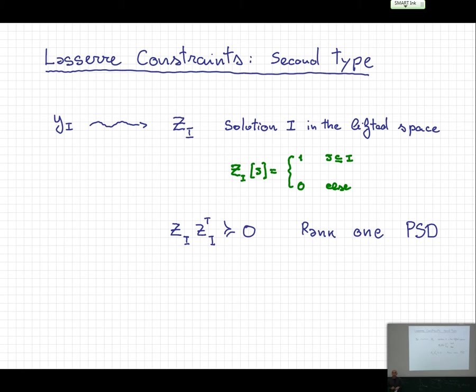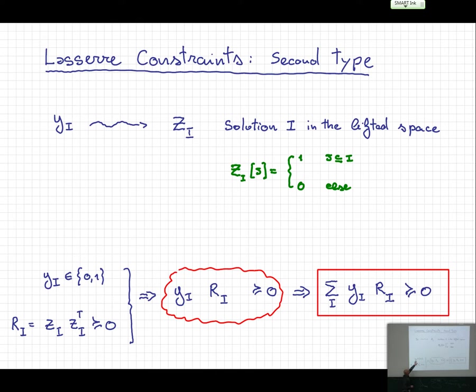This z_I is a vector, and if I multiply the vector by its transpose, I get a rank-one matrix, which is PSD. If this is an integral solution, it's zero-one, so this is a rank-one matrix. Multiplying y_I by this gives another PSD rank-one matrix. This is a valid constraint in the integral solution, and summing up gives a valid constraint as well. So what you see here is a valid constraint for any integral solution.